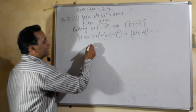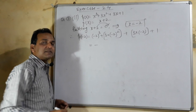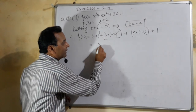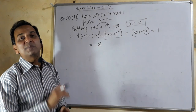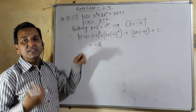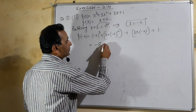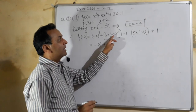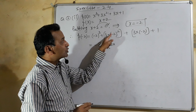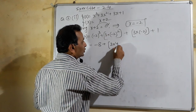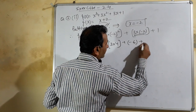We will follow the same method: putting divisor x + 2 = 0, we get x = -2. Put this value into the polynomial. So P(-2) = (-2)³ + 3×(-2)² + 3×(-2) + 1. Solving: (-2)³ — base negative, power 3 odd — gives -8. Then 3×(-2)² = 3×4 = +12. Then 3×(-2) = -6. And last +1.